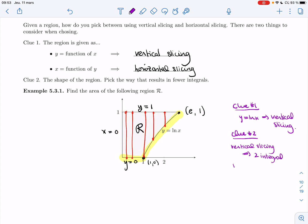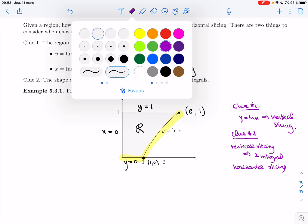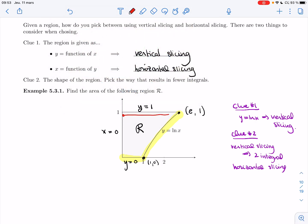Now, if I used horizontal slicing, then I would draw my sticks this way, and I would need a single integral, because for the entire region, this curve is on the right, and this curve is on the left.